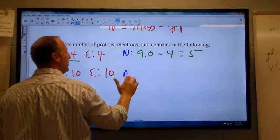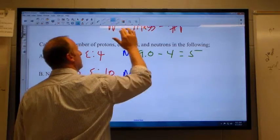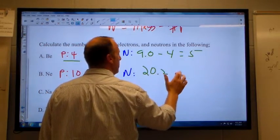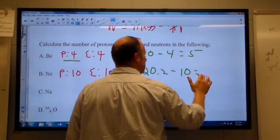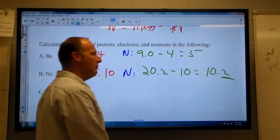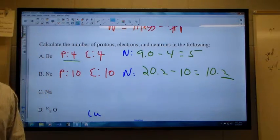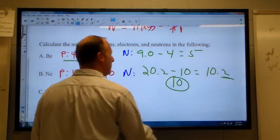And the number of neutrons would be the big number, 20.2, minus the number of protons, 10, which gives me 10.2. Oh wait a minute, we cannot have a 0.2 neutron. So we round that to 10 neutrons.